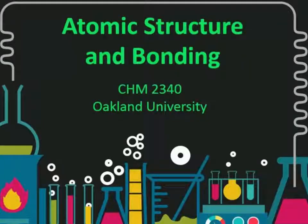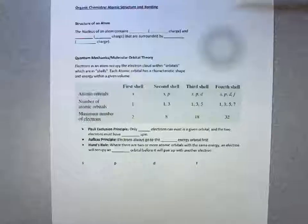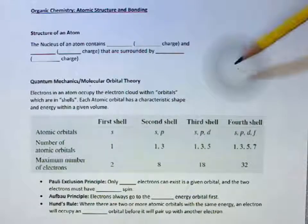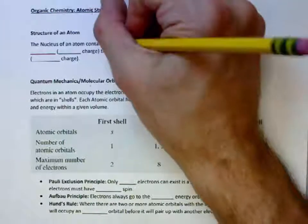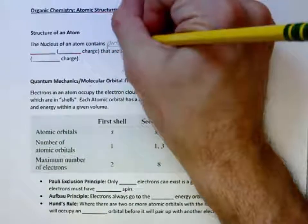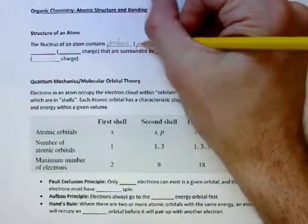In this video, we will be talking about atomic structure and bonding. For the structure of an atom, we have a nucleus at the center which contains protons, which are positively charged.